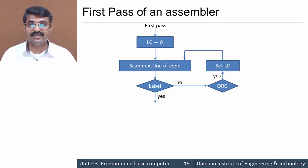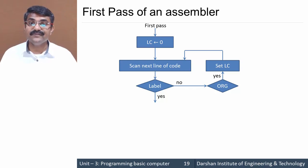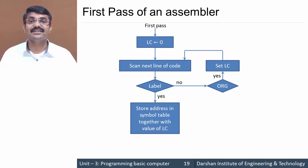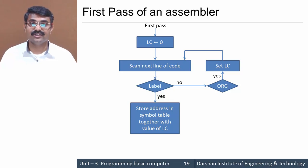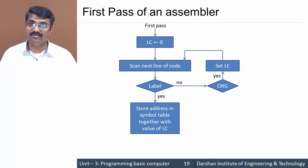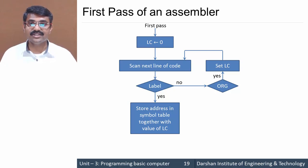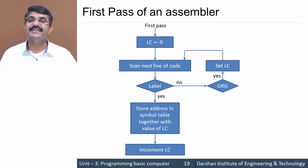Again, we check whether the line is a label. If it is a label, we store the address in the symbol table along with the location counter — meaning the LC value is stored for that particular symbol. We then increment the location counter by one and move on to scanning the next line of code.